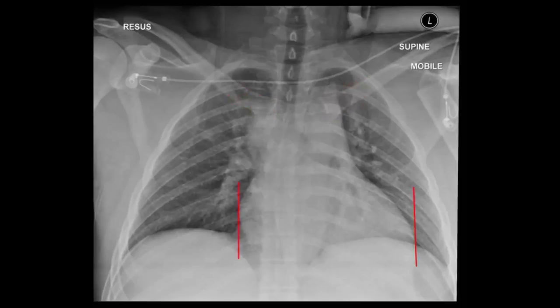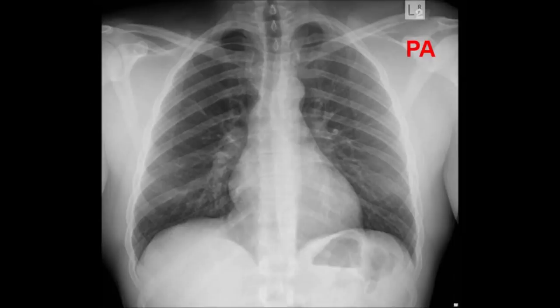Also notice that the heart appears abnormally wide on AP. Secondly, you want to know the position of the patient — are they upright or lying? If that information is not available, in an upright patient you might see a fluid level in the stomach.